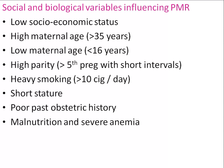Other biological variables include poor obstetric history, malnutrition, severe anemia, and multiple pregnancies — twins, triplets, quadruplets. These are all the main biological factors influencing perinatal mortality. Multiple pregnancies, malnutrition, and severe anemia can be prevented by improving nutritional status and correcting anemia.